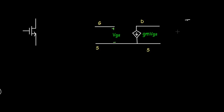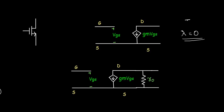Here lambda, the channel length modulation, is considered as zero. If we do consider the channel length modulation effect of the MOSFET, then we have to add an output resistance RO to the small signal model. For simplicity of analysis, we generally consider channel length modulation equal to zero and use the simpler small signal model. That is all about the small signal model of MOSFET. Thanks for watching, we will see you in the next class.